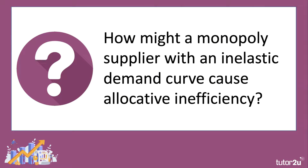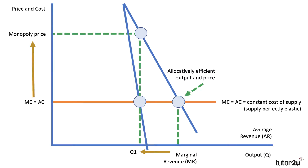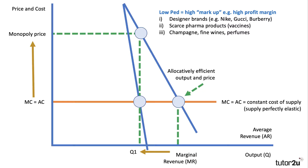How might a monopoly supplying a good with inelastic demand cause allocative inefficiency? With a relatively price inelastic demand curve, the original allocatively efficient price is at the intersection of MC and AR. In this situation, output is squeezed to Q1 and because of low price elasticity, the monopoly can charge a much higher price — well above marginal cost — generating a lot of producer surplus and profit, while consumer welfare is lost.